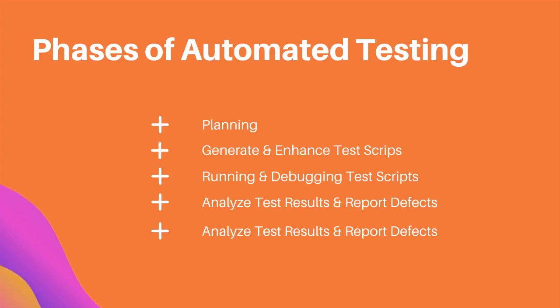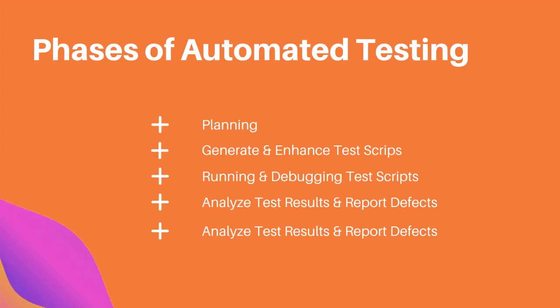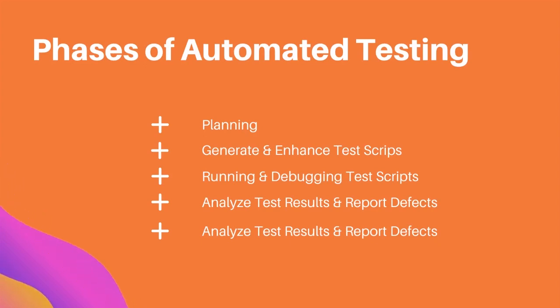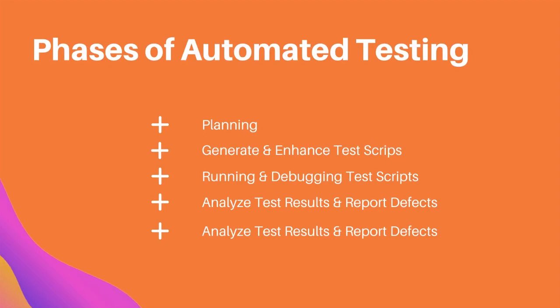The phases of the automated testing life cycle include: planning, generating and enhancing test scripts, running and debugging test scripts, and analyzing test results and reporting defects.